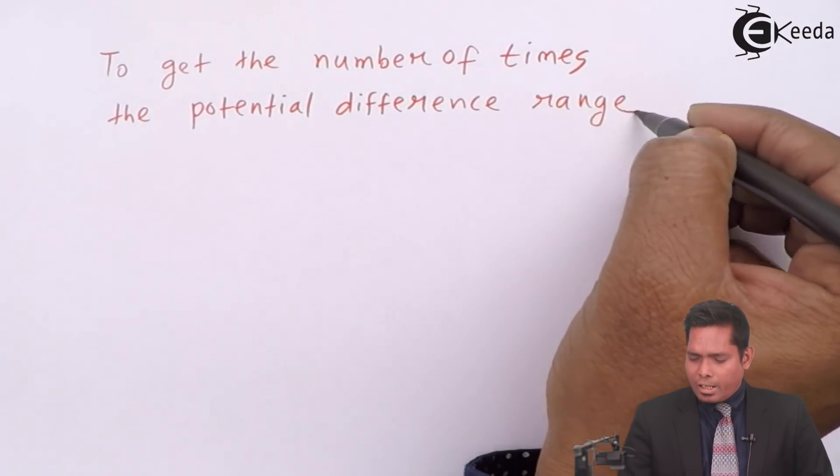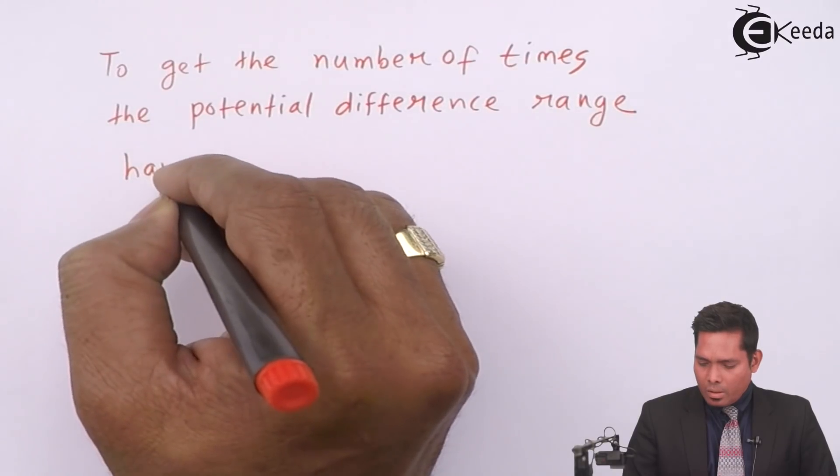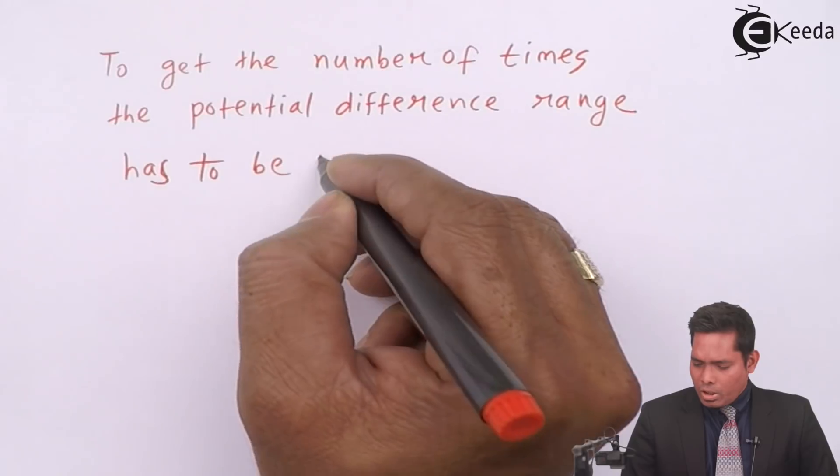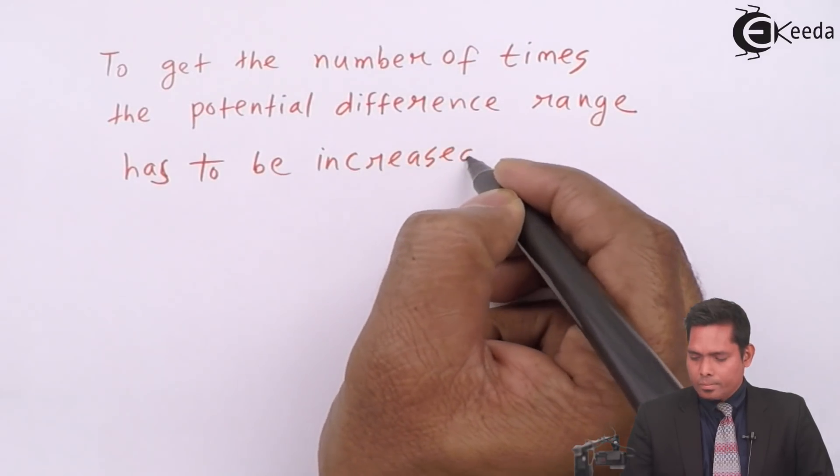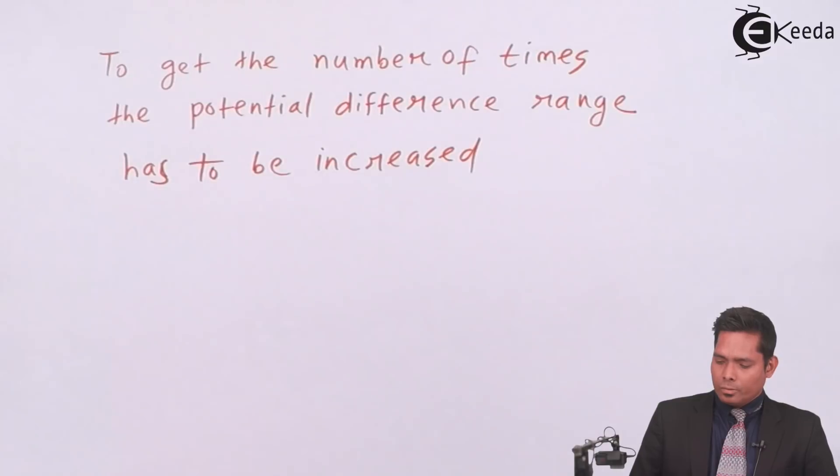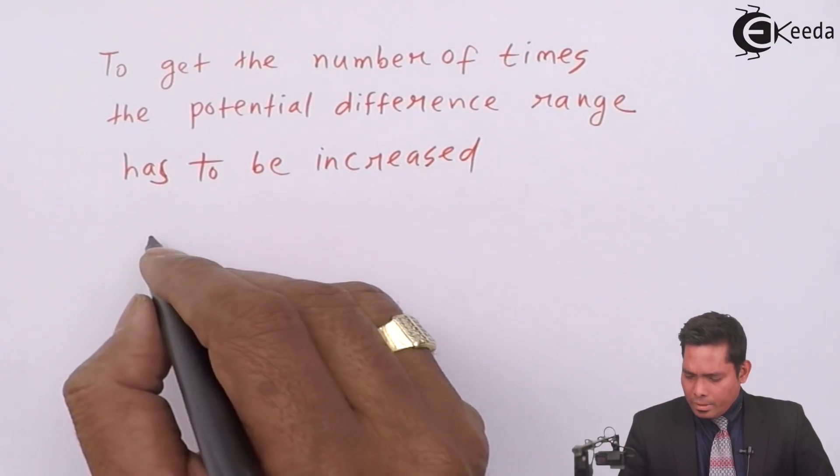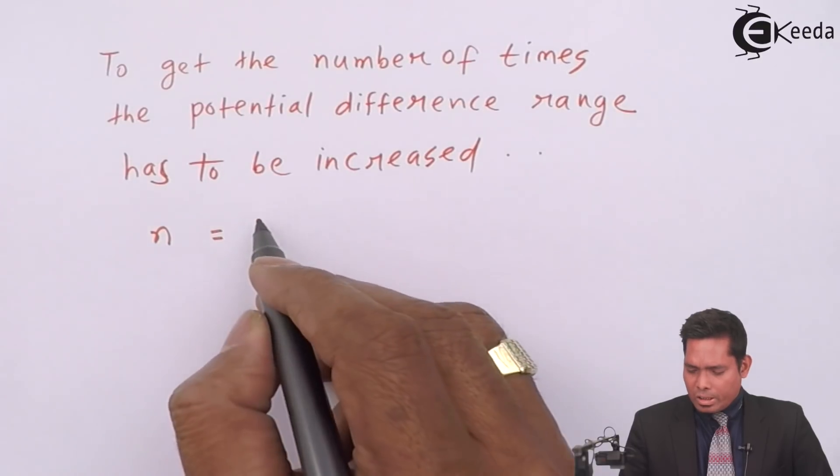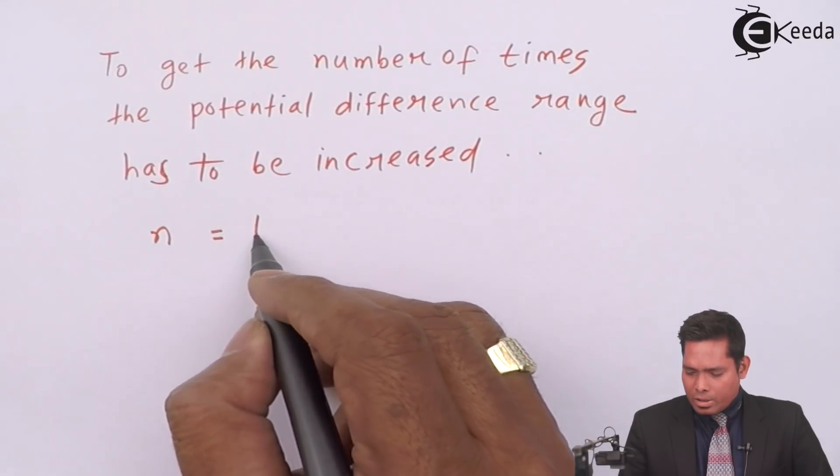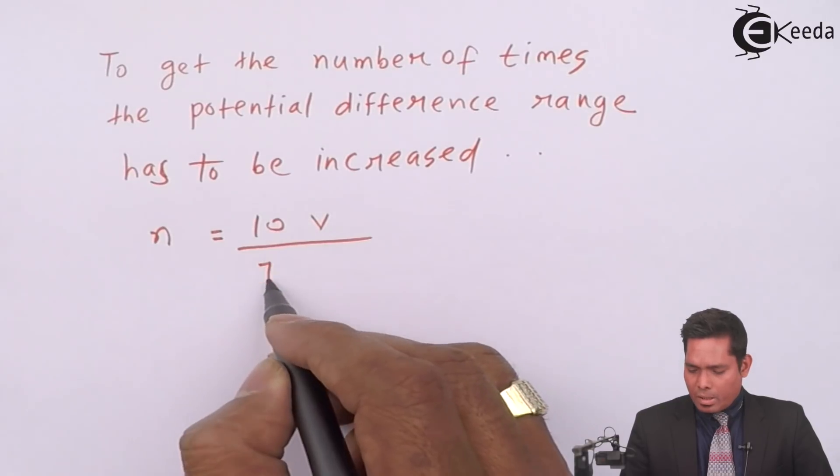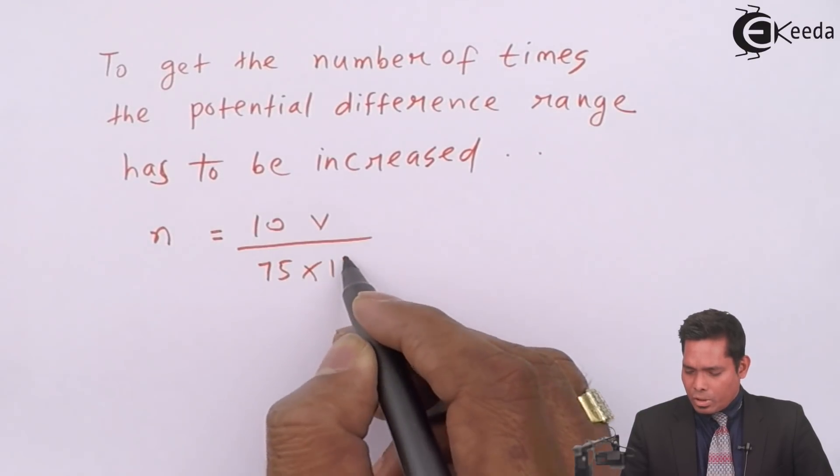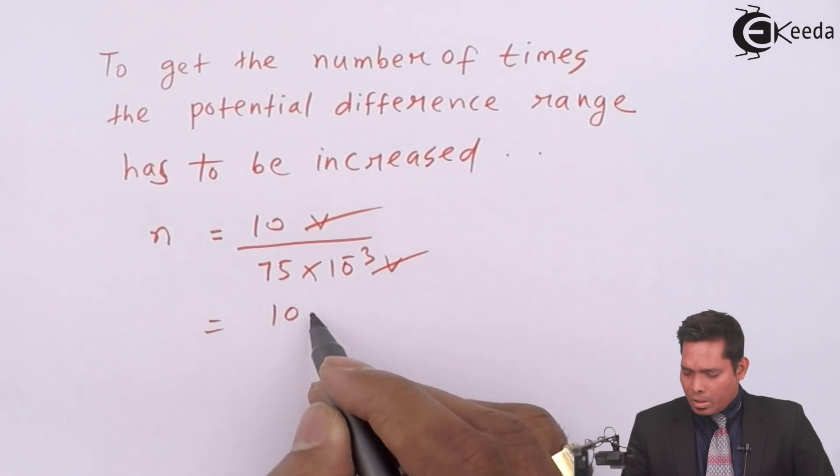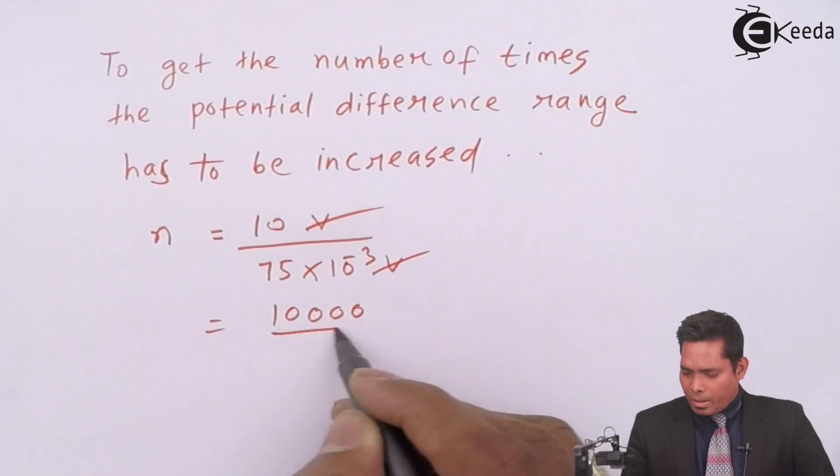To get the number of times the potential difference range has to be increased, we have to find the increase. We will find the number of times it's increasing - the final I want is 10 volt divided by initially it was 75 times 10 raised to minus 3 volt. So volt cancels, this goes off. This is 10,000 divided by 75.